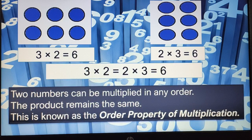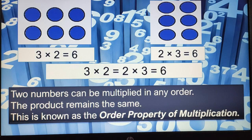So two numbers can be multiplied in any order and the product remains the same. If we change the sequence of the numbers, we will still get the same answer. This is known as the order property of multiplication.